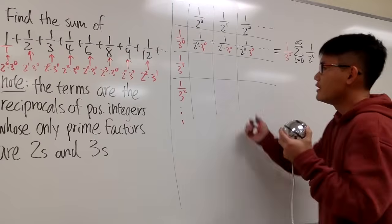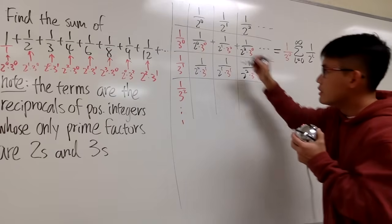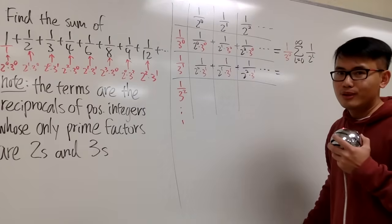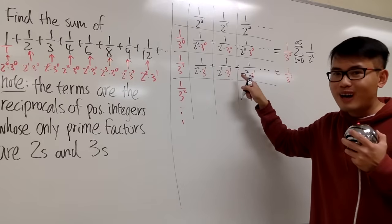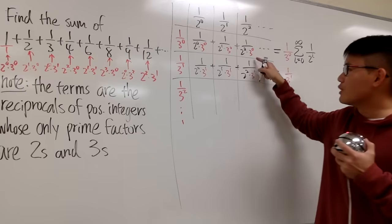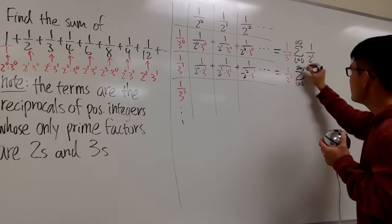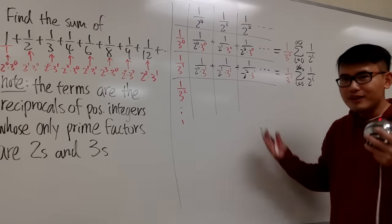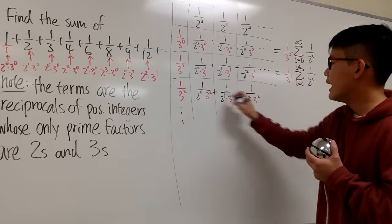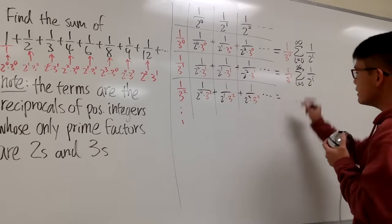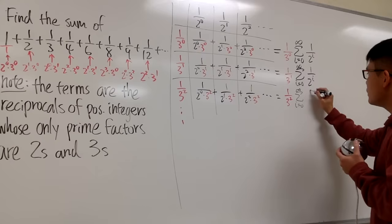Now let's work on the second row. Adding those up, they have a common factor of 1 over 3 to the 1st. Factoring that out gives 1 over 3^1 times the sum as i goes from 0 to infinity of 1 over 2^i — the same summation as before. For the third row, we factor out 1 over 3 squared, and again we get the sum as i goes from 0 to infinity of 1 over 2^i.